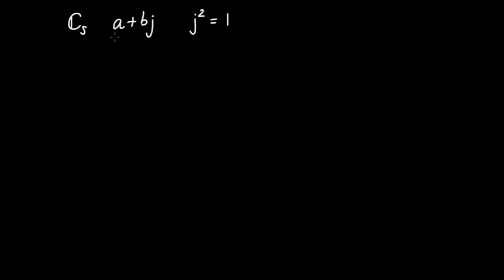The split complex numbers are numbers of the form A plus Bj, just like the complex numbers are numbers of the form A plus Bi. A is going to be called the real part, and B is going to be called the imaginary part. Instead of an i, I'm going to have this thing called j, and it has the property that j squared is going to be 1. You should contrast that to the complex numbers where i squared is minus 1. This squaring to 1 instead of minus 1 is going to make all the difference in terms of what these numbers do when you multiply them.